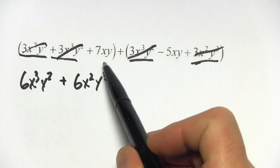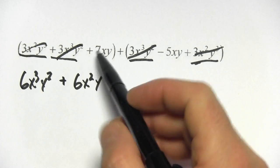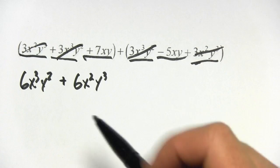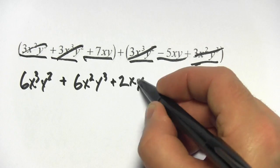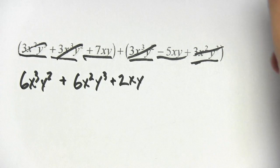And what we have left is xy terms. Those are also like terms. A positive 7 and a negative 5. That comes out to be a positive 2xy. All right. Let's try one more.